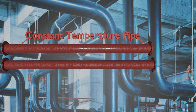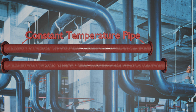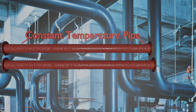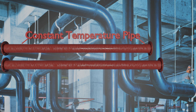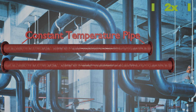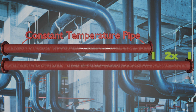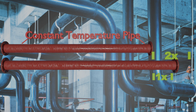As the temperature increases, pipes expand in all directions. And when the temperature decreases, they contract accordingly. The piping acts in a consistent manner — a certain length of pipe will expand twice as much if it is heated by 400 degrees than if it is heated by 200 degrees.